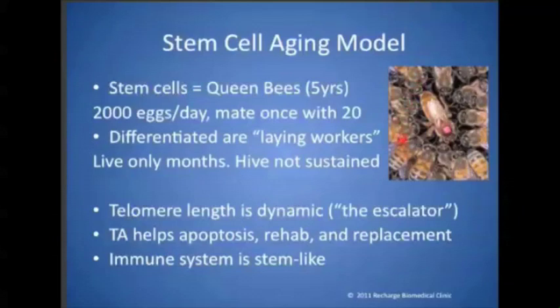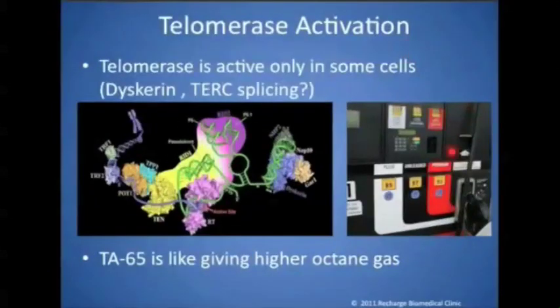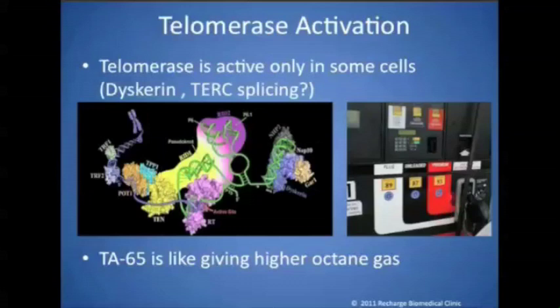If you have telomerase that is active, it's always running — and what we're doing is not anything unnatural. It's something that is always going on in your body. The question is: do you want regular gas running your telomerase engine, or do you want high-octane gas? That's what TA-65 really is — it's higher-octane gas.